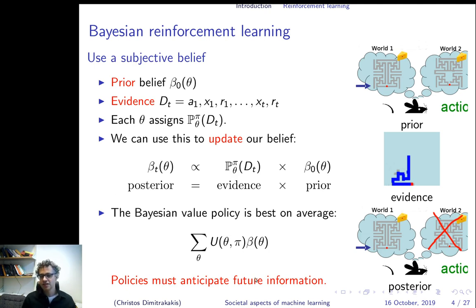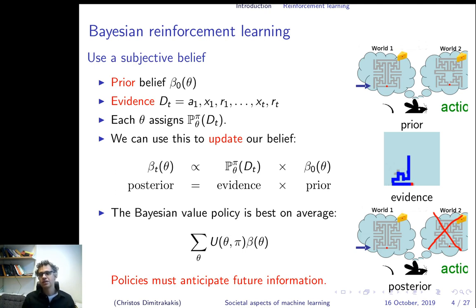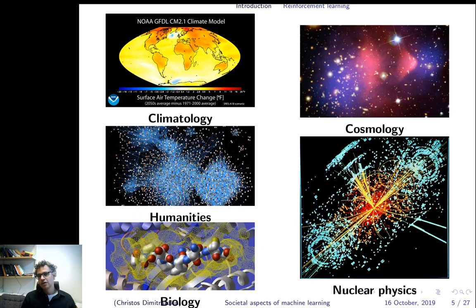The interesting thing is that your policies now have to anticipate future information. You can only maximize this in a nice way if you use adaptive or learning policies. This means the problem is now much more difficult than before — but theoretically, the problem is solved. So we have a modeling problem and a decision problem, and both problems appear in science.